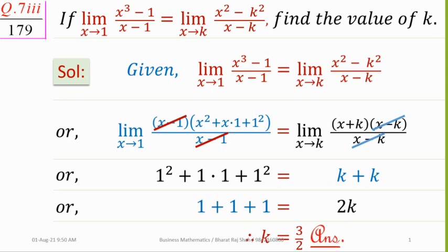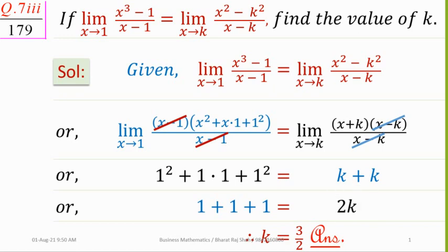Setting 3 equal to 2k, we get k = 3/2. This means that when the value of k is 3/2, both limits will produce the same limiting value. So the value of k is 3/2.